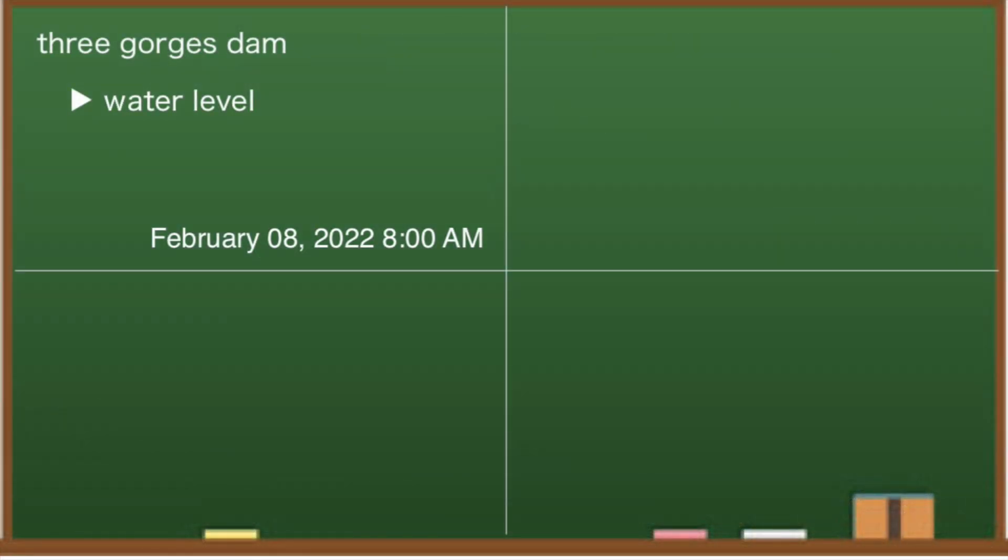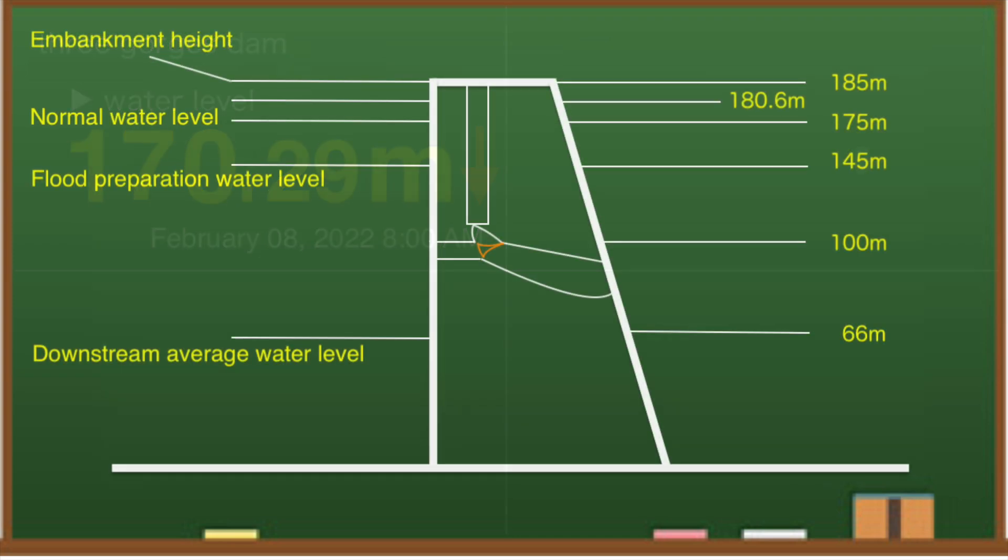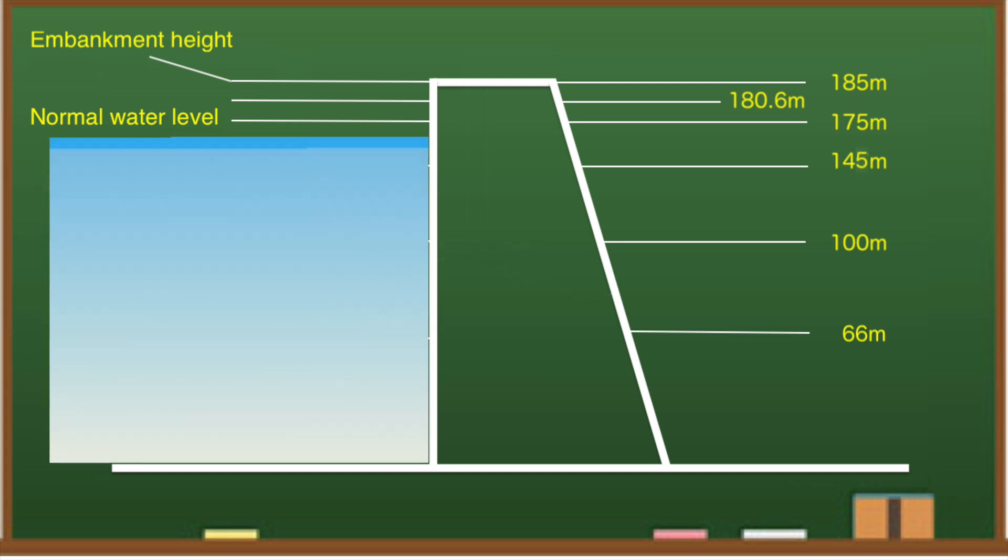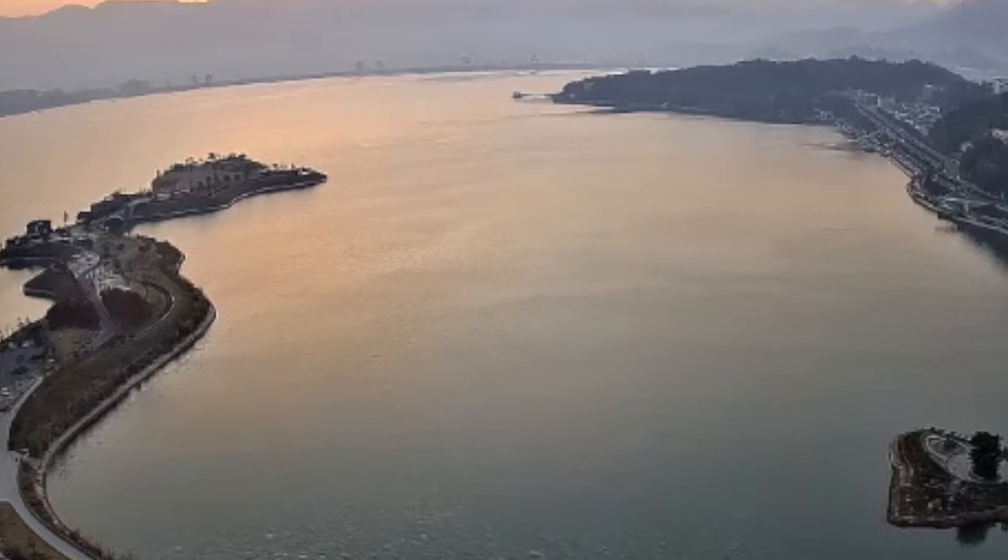At 8 AM on February 8th local time, the water level at the Three Gorges Dam is 170.29 meters. Compared to the day before yesterday, it is about the same level. In the cross section of the dam, the water level is around here. This may be the situation in the field.